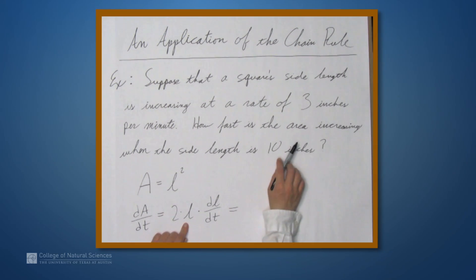Now, what is l? Well, we're asked for the speed at which the area is increasing when the side length is 10 inches. So, we can replace l with 10. And we're told that the side length is increasing at a rate of 3 inches per minute. So, we can multiply this whole thing by 3. So, l is 10 and dl/dt is 3.